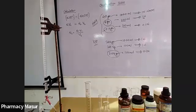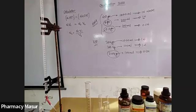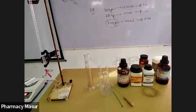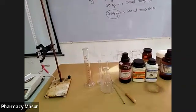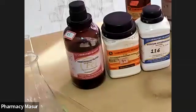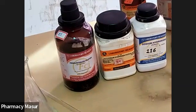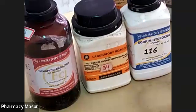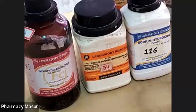The objective is to standardize a sodium hydroxide solution using potassium hydrogen phthalate (KHP). For this purpose, we are using sodium hydroxide (NaOH) in the form of pellets, and potassium hydrogen phthalate, which has a molecular weight of approximately 204.